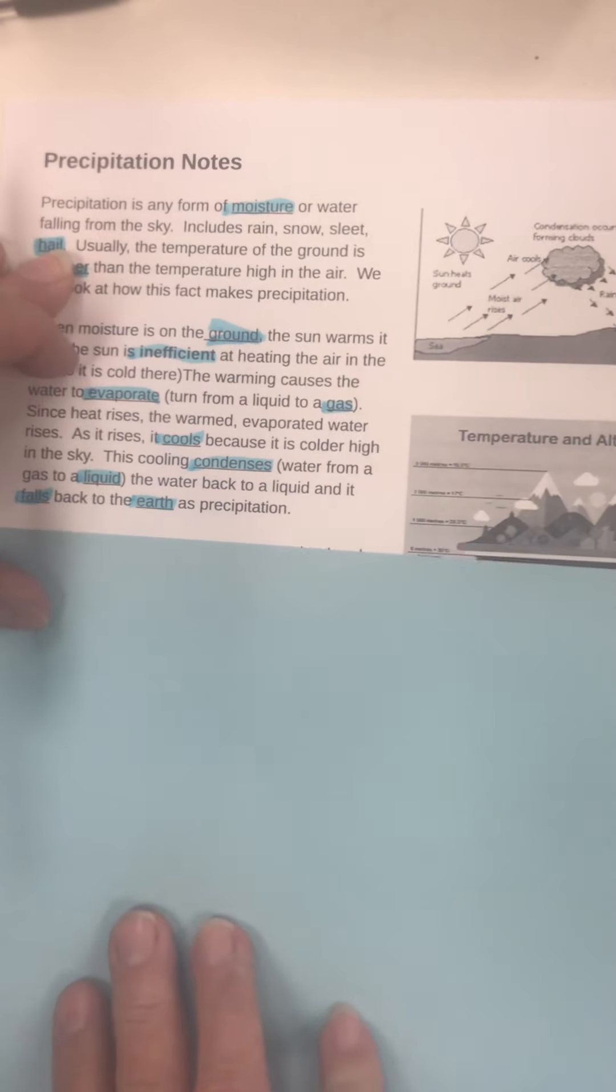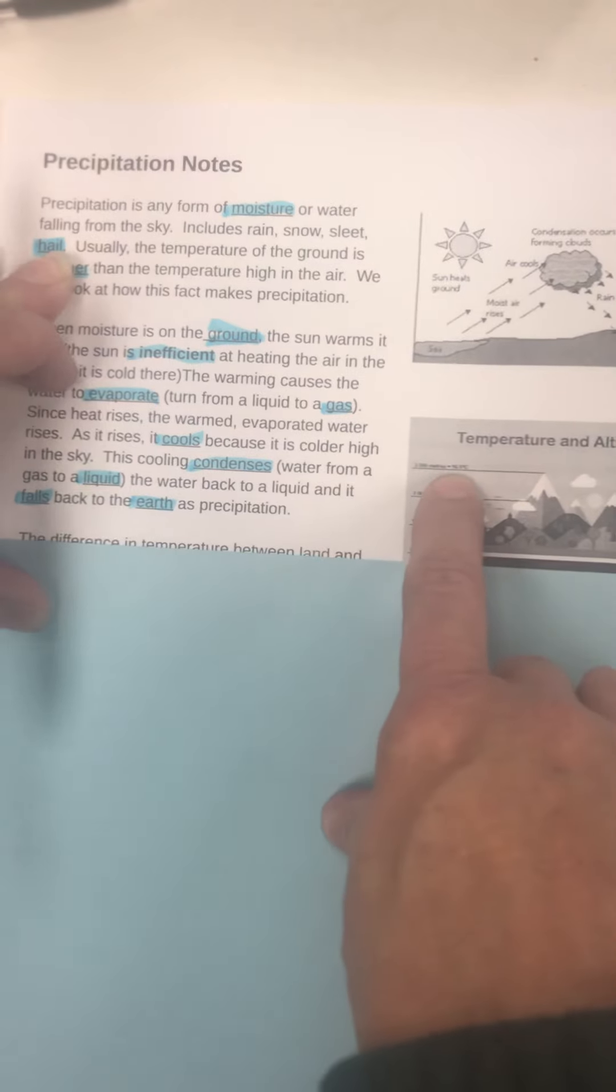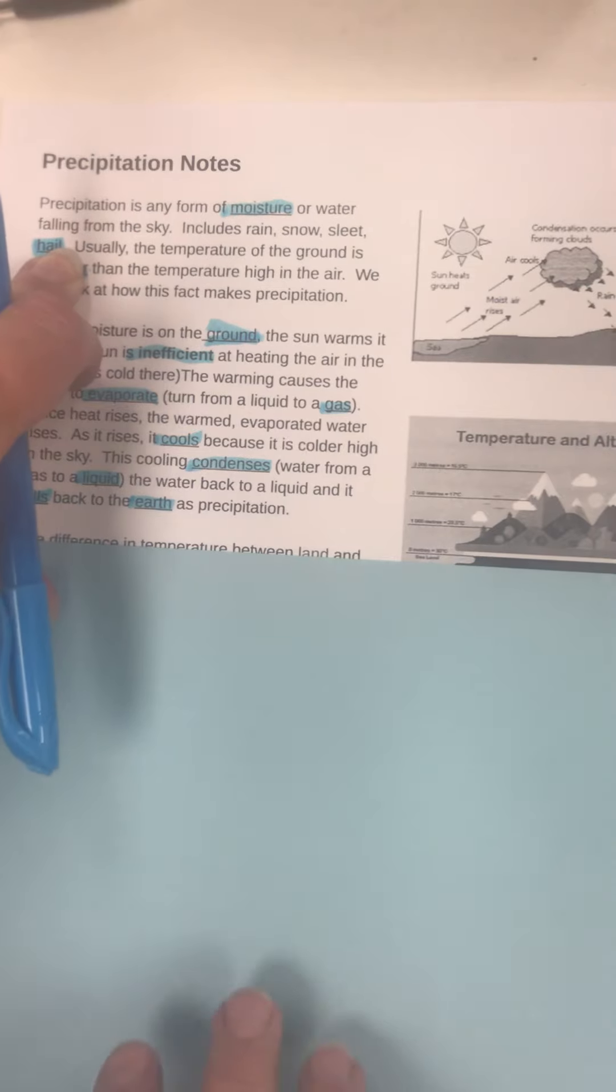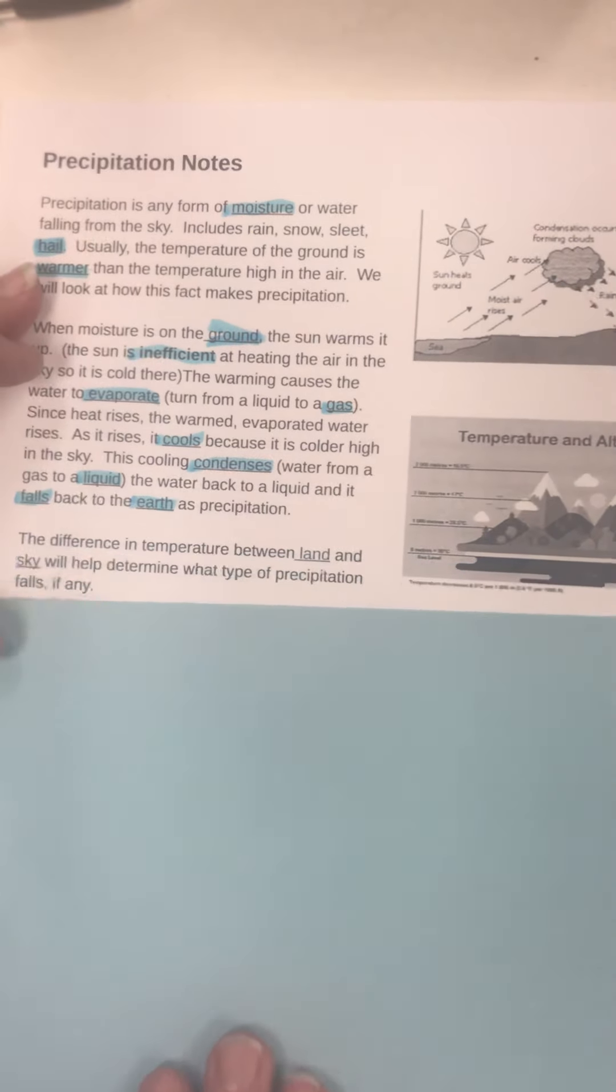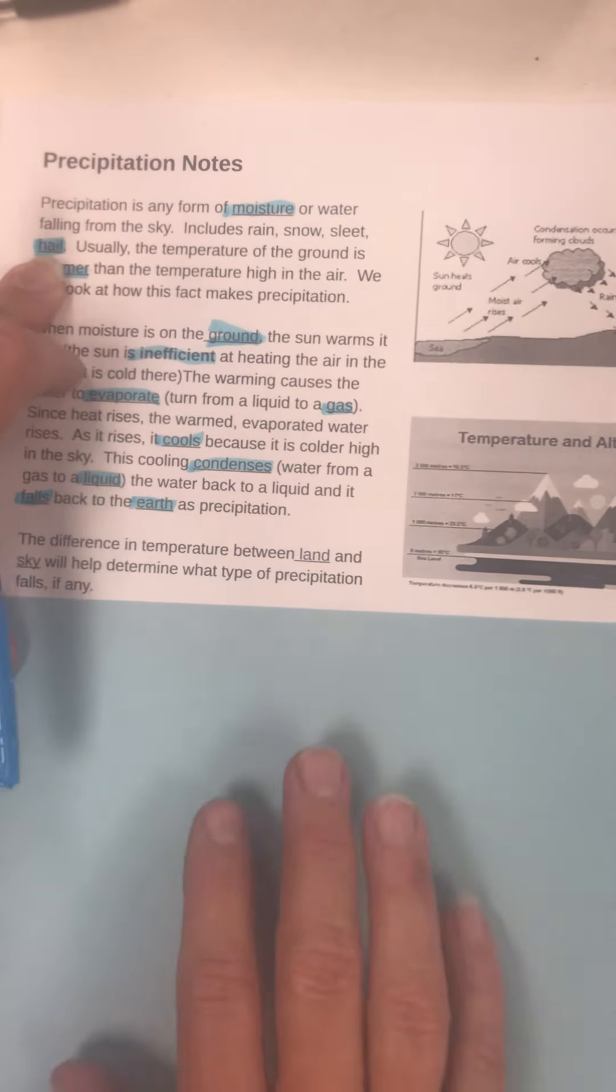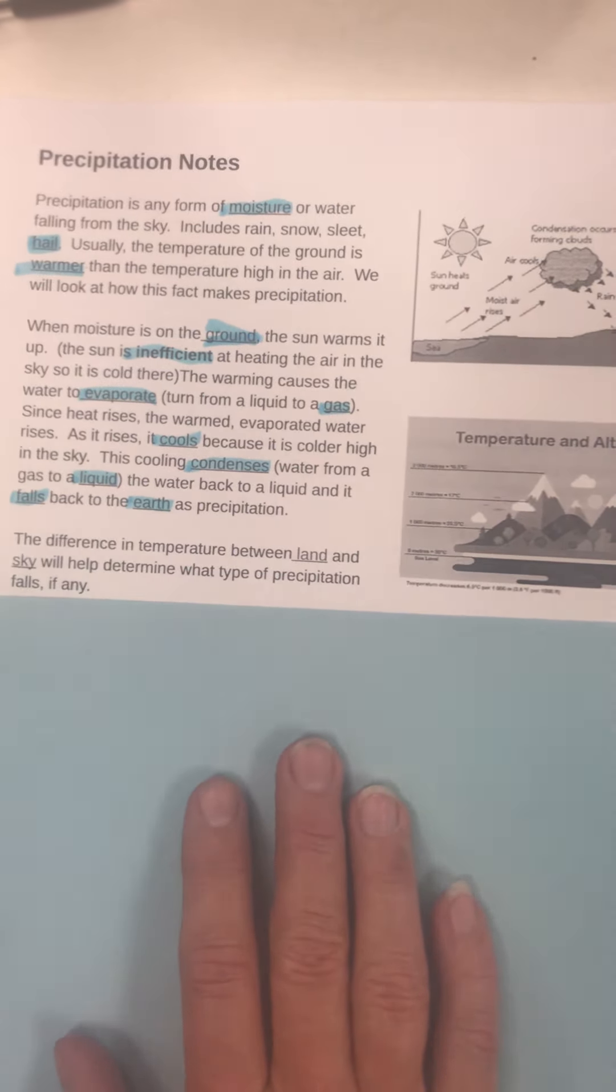So, it's showing you a little diagram over here about the temperature and how it gets colder as you go up, because there's less for the sun to heat up up there, so it's colder up there. Heat rises, so it makes sense that the warm air would rise up. And as it would rise up, it would cool, condense back into a liquid, and drip down.